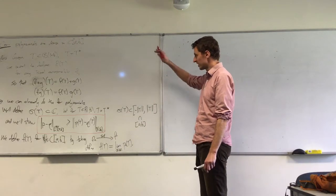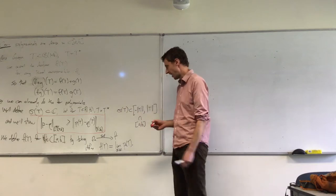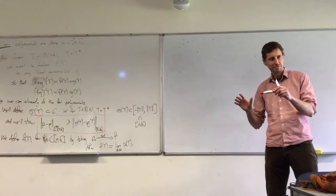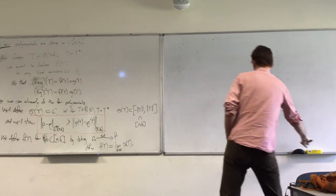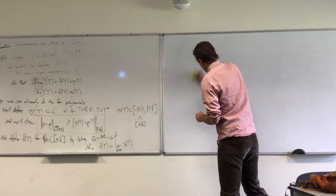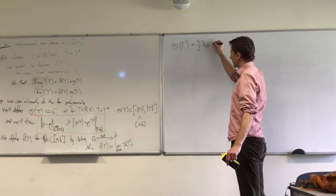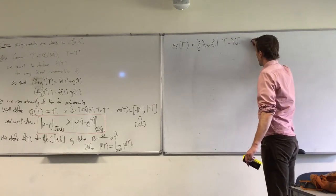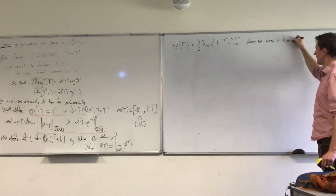There's a lot missing in this outline, and now we have to go back and understand what on earth the spectrum is to begin with, and then we'll build up to this key estimate. Does that make sense as an outline of the plan?